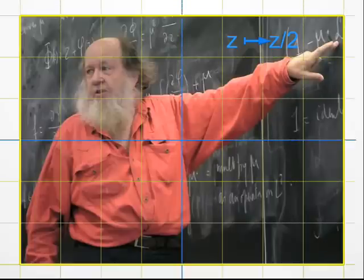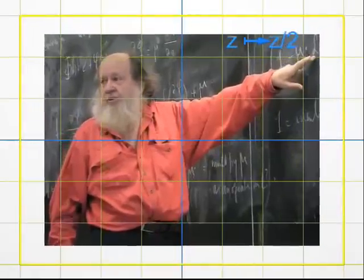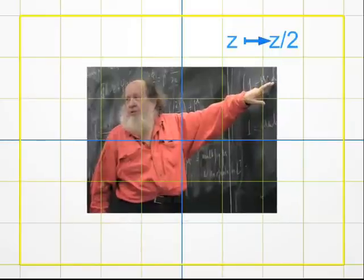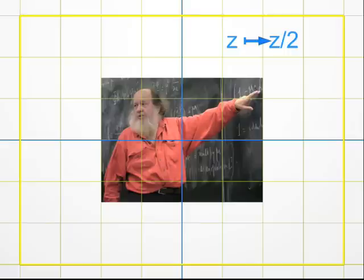Let's begin with something simple. The transformation Z goes to Z over 2. Each point on the photo corresponds to a complex number Z that's divided by 2. We get another point. It's imaged by the transformation, hence a new picture.